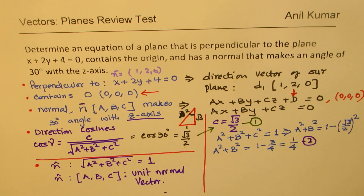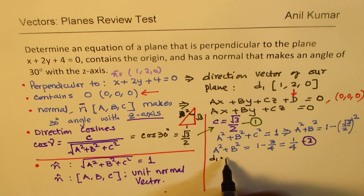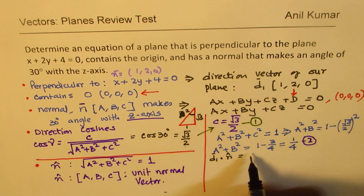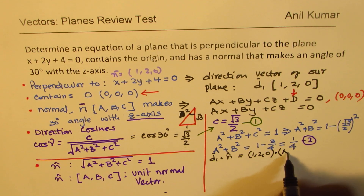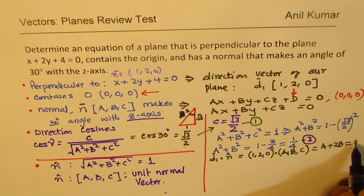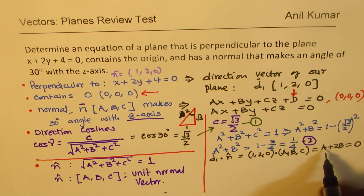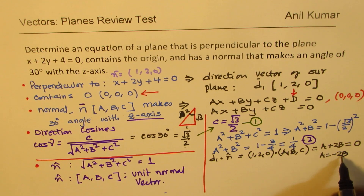Now how do we find a and b? We have a direction vector d1 which is 1, 2, 0, and we also have the normal a, b, c. Their dot product should be 0. So d1 dot the unit normal equals 0. We do the dot product of 1, 2, 0 and a, b, c. That means a plus 2b equals to 0. From this we get our value of a as equal to minus 2b. We'll call this equation number 3.